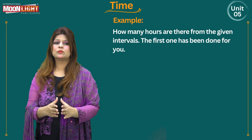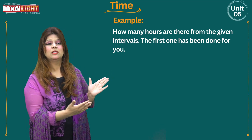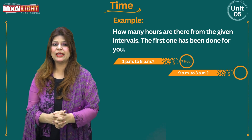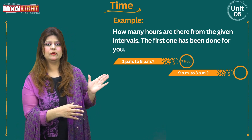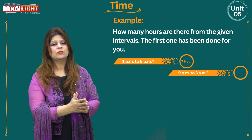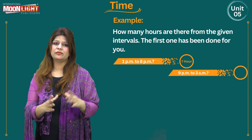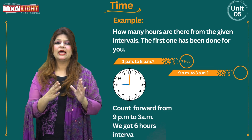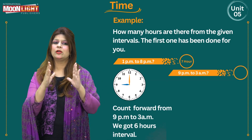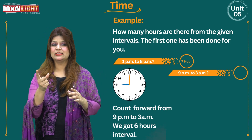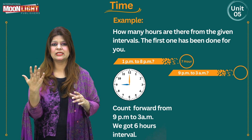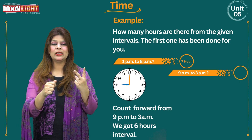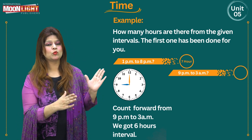The example asks: how many hours are there in the given interval? The first one is done for you. From 1 PM to 8 PM the answer is 7 hours. Count forward on the clock after 1: 2, 3, 4, 5, 6, 7, and 8 — that gives 5 and 2, which is 7 hours. This is a simple and easy question when both times are on the same PM side.